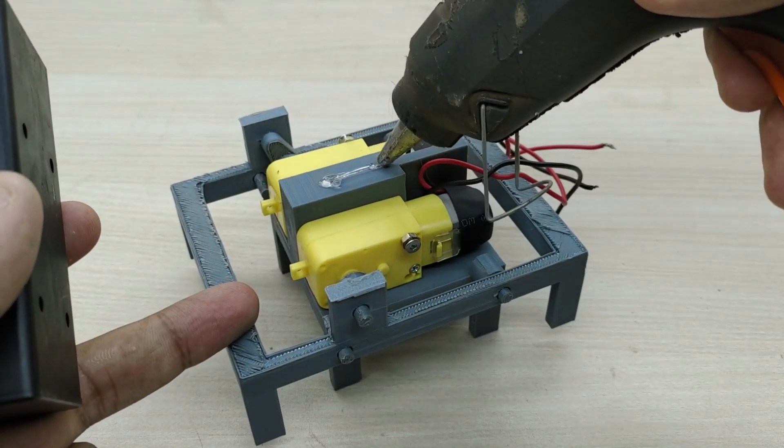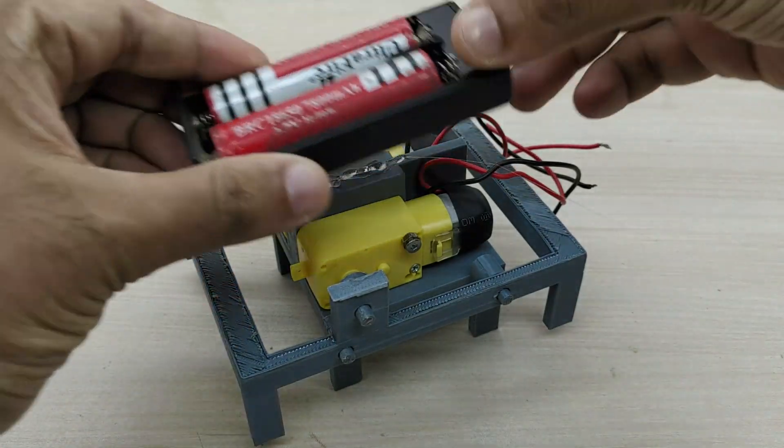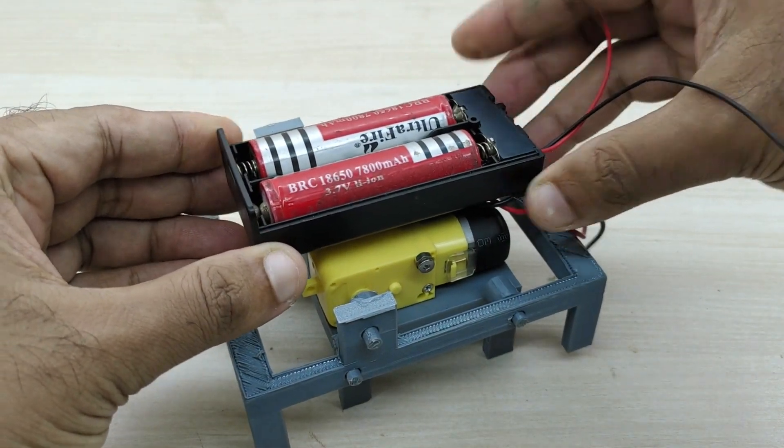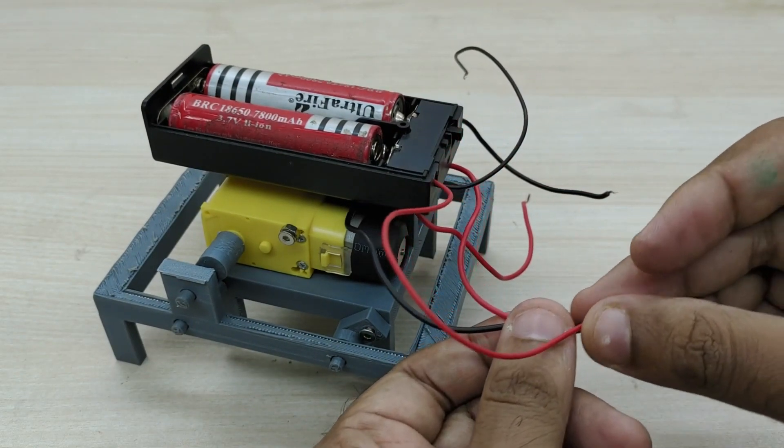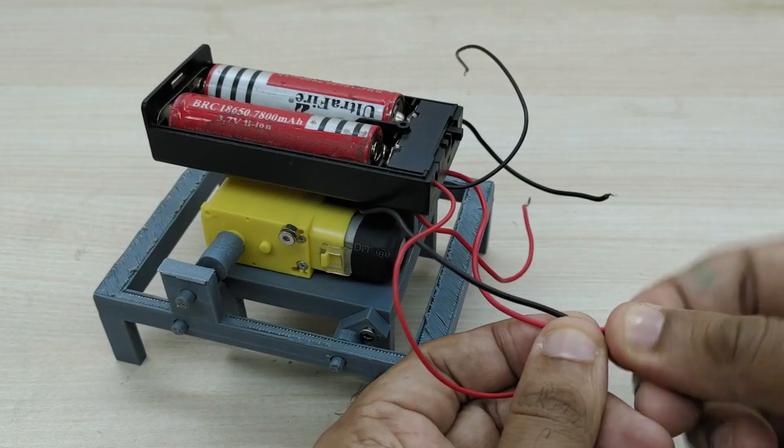Glue the battery pack on top as shown. Join together black wire of one motor, red wire of one motor and positive red wire of battery.